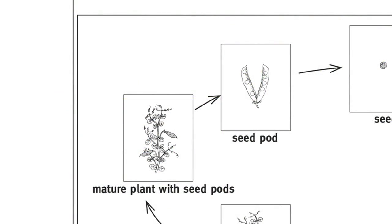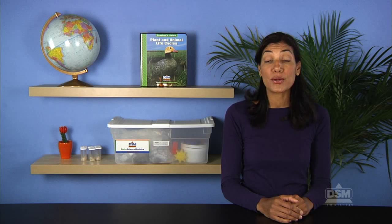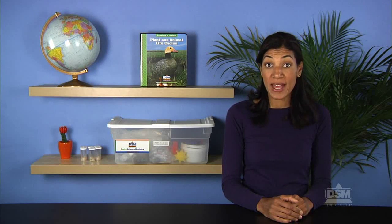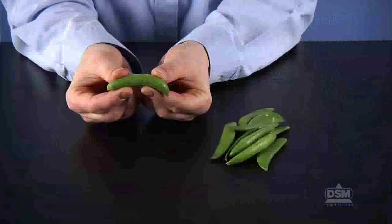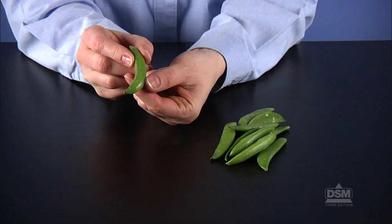Retrieve the two remaining pea life cycle pictures of a mature plant with seed pods and a seed pod for use in the activity. Ideally, you should conduct this activity once students' plants have developed their own seed pods, and those pods have been given a chance to dry out. If they are not present, purchase fresh pea pods from the grocery store.